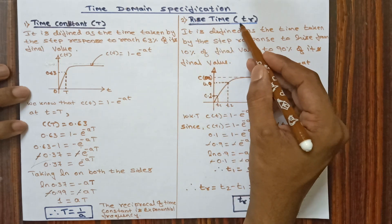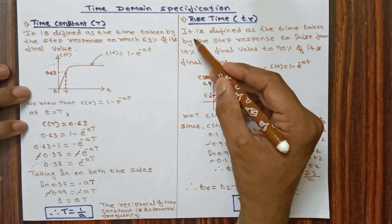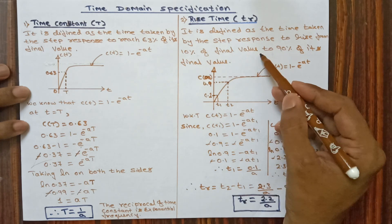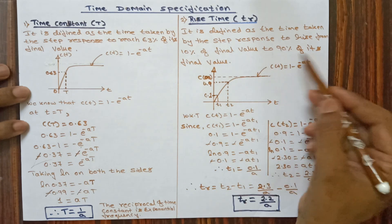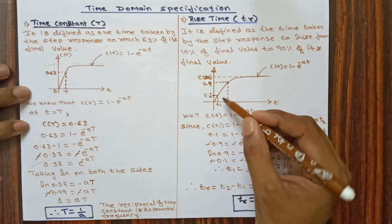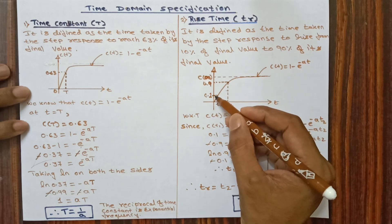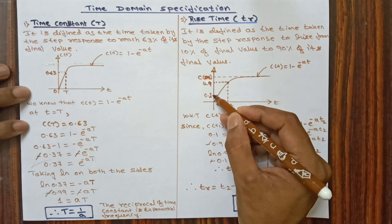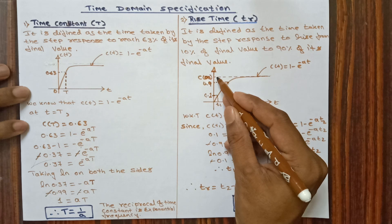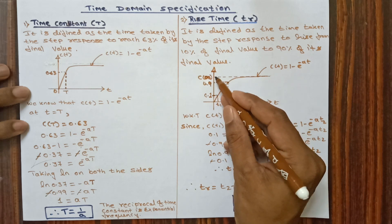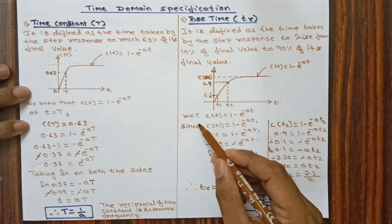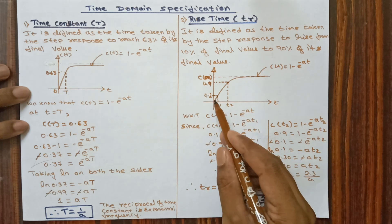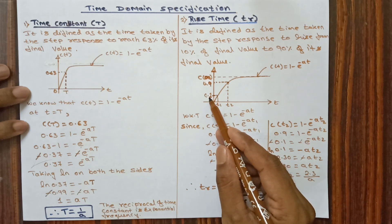The second parameter is rise time, denoted by TR. It is defined as the time taken by the step response to rise from 10% of the final value to 90% of its final value. You can see the response - time taken from 10% to 90% of its final value. We know that C(t) is equivalent to 1 minus e power minus at.